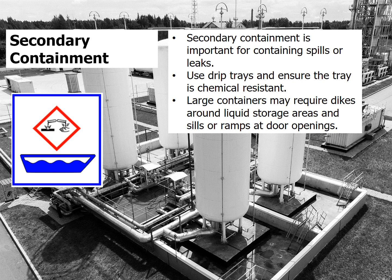Secondary containment is important for containing spills or leaks. Use drip trays and ensure the tray is chemical resistant. Large containers may require dikes around liquid storage areas and sills or ramps at door openings.